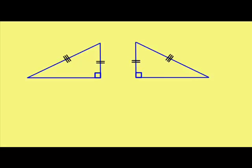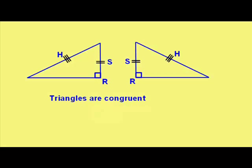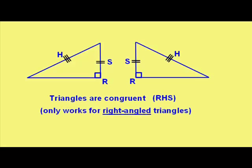So the rule says that when you've got a right angle, hypotenuse, and another side the same, then the triangles are congruent, and the reason we give is RHS, right angle hypotenuse side. It only works for right angle triangles. It's important to remember that.